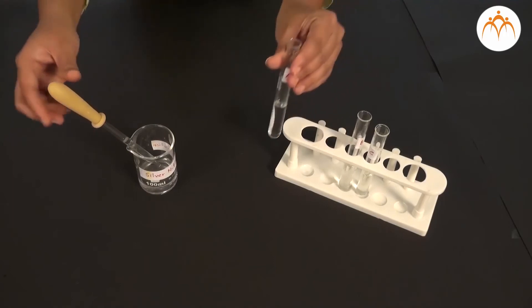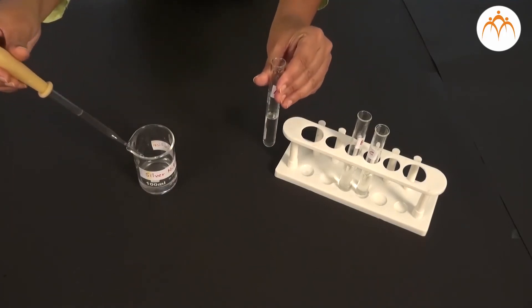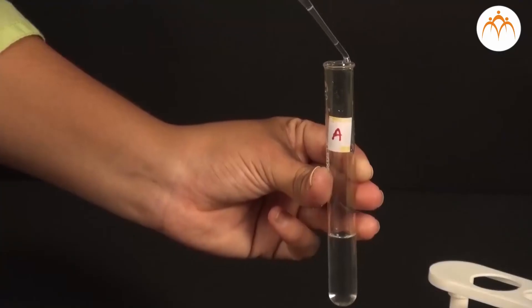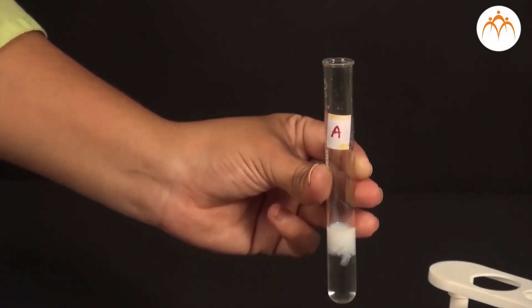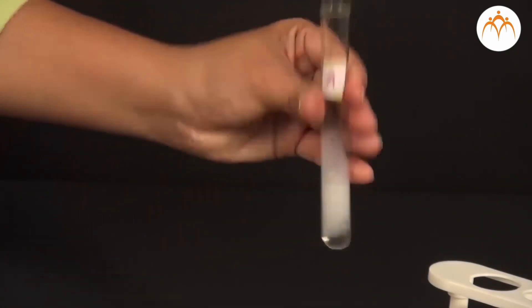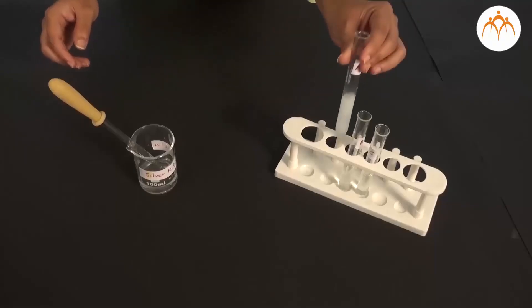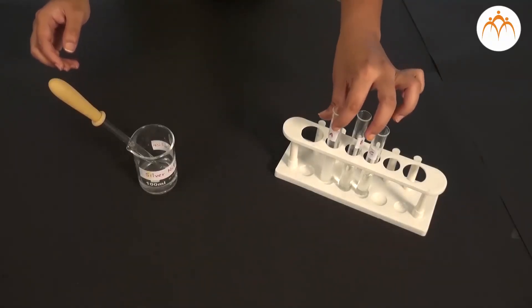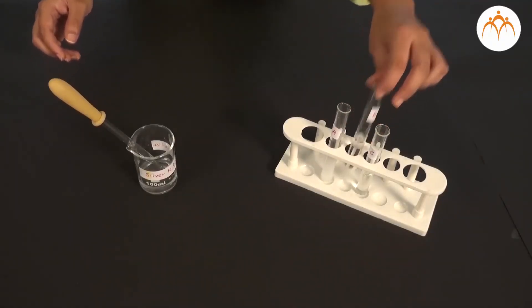Note down the observations in the table. As soon as you add silver nitrate, we find that chemical reaction starts and some product is developed. This product is not a liquid but it is solid. Such solid product that comes out of the solution is known as precipitate and the process is called precipitation.